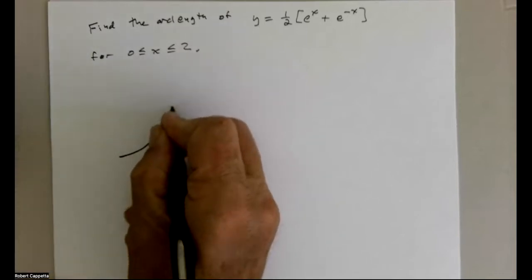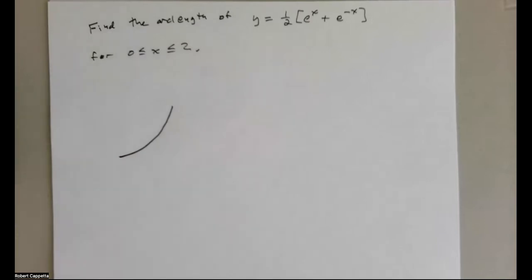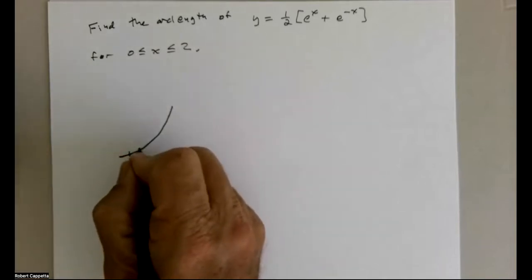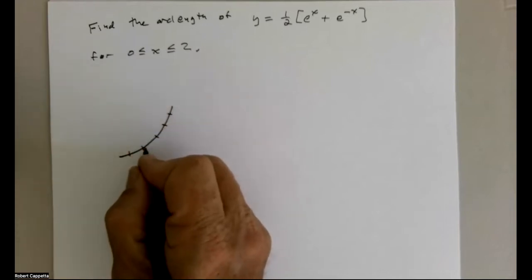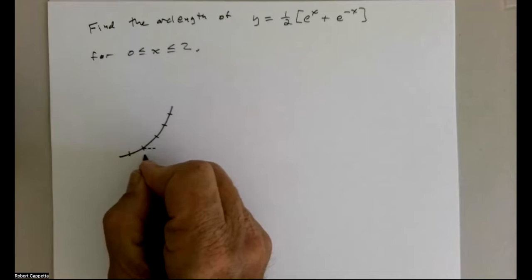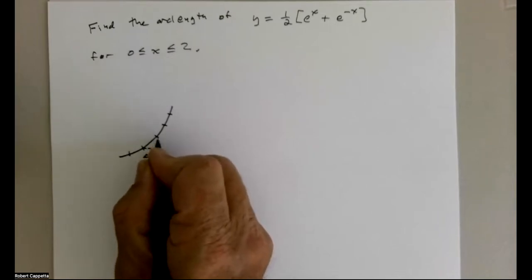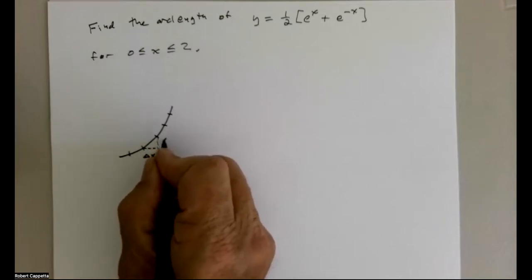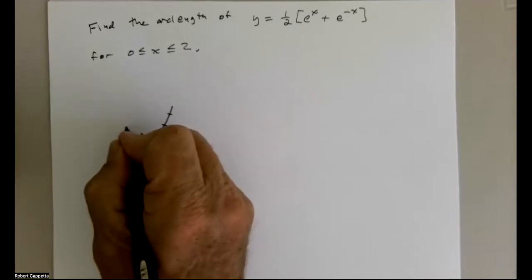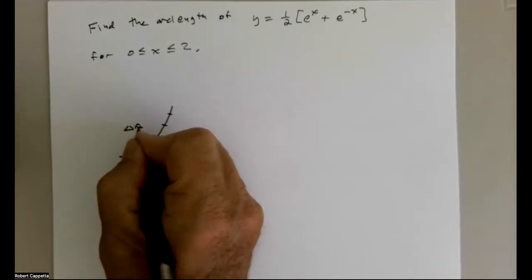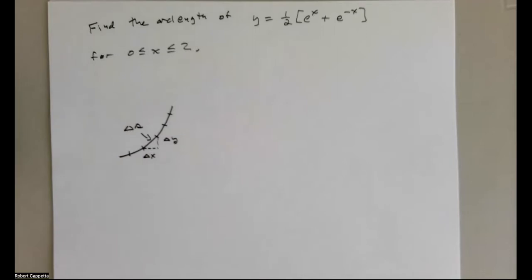The graph looks something like this. Let's imagine that we're partitioning it, breaking it up into many different pieces and finding the arc length of each individual piece. This you could think of as the change in x, this as the change in y. If it were straight — and if you partition fine enough, eventually it will be straight — that'll be the change in s.